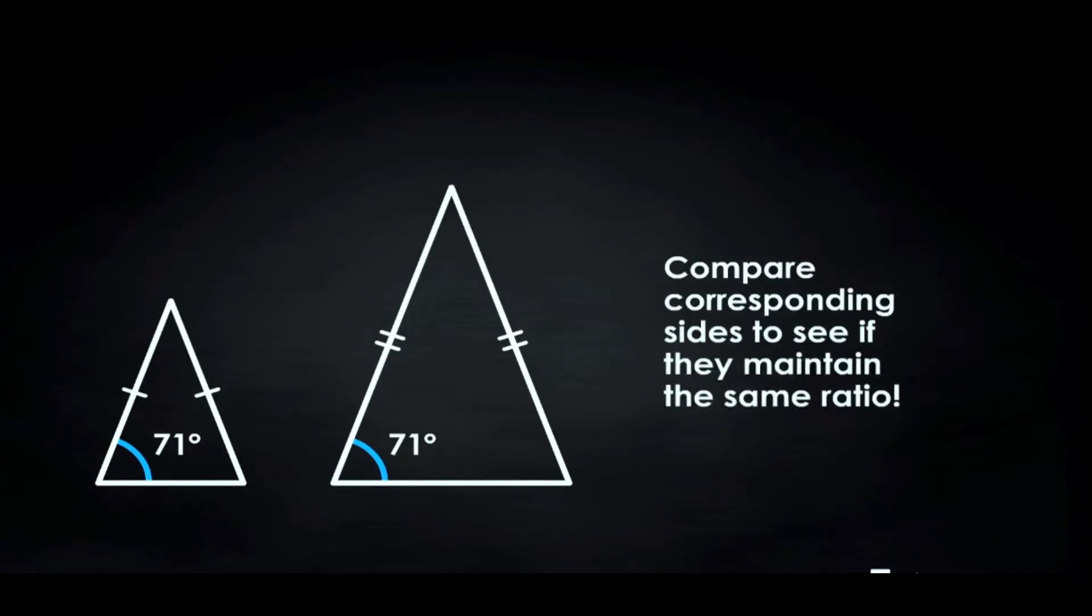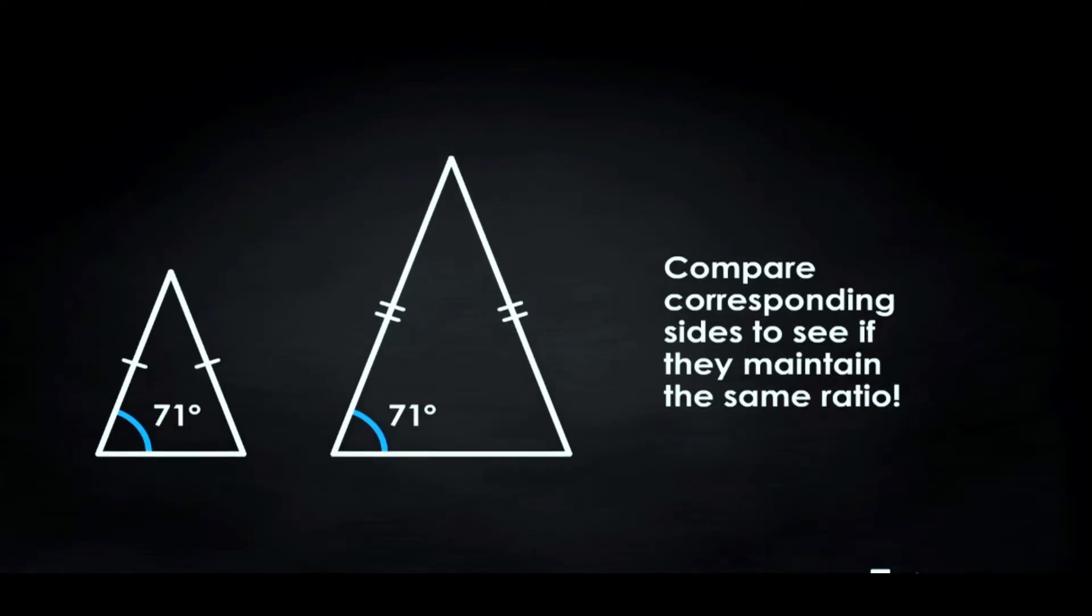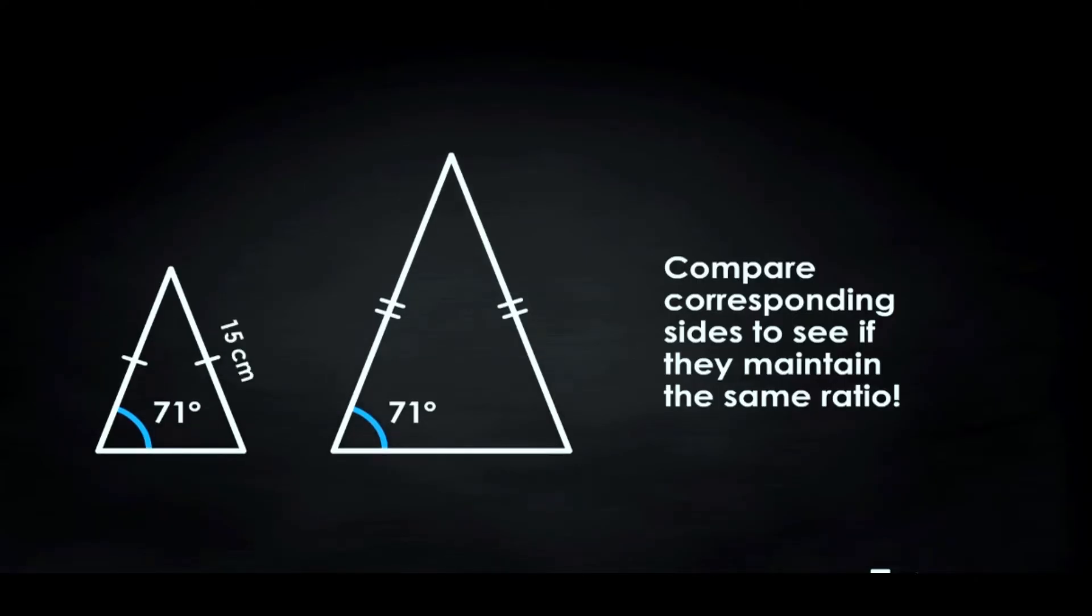Next, you have to compare corresponding sides to see if they maintain the same ratio. Notice the left triangle has two legs 15 cm long and a third side 10 cm long. The right triangle has 30 cm legs and a 20 cm third side. If the ratio of one side and one leg of the left-hand triangle is the same ratio as the corresponding side and leg of the right-hand triangle, they are proportional to each other, so they are similar.